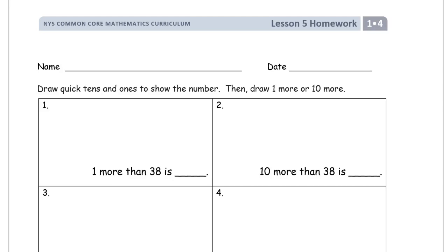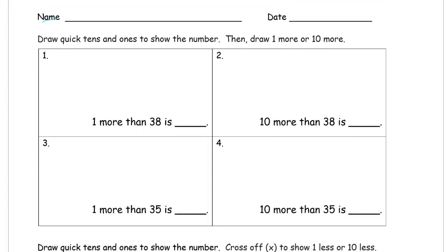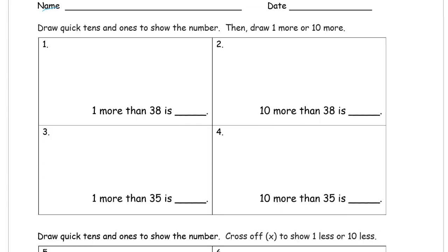Welcome to the homework for grade one, module four. This is lesson five. Write your name here first. We're just drawing quick tens and ones to show the number, and then we'll draw one more or ten more. This lesson really is all about less and more, and tens and ones.